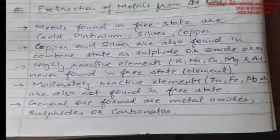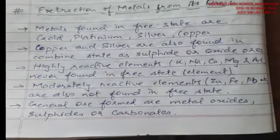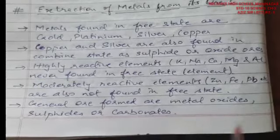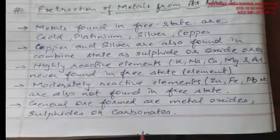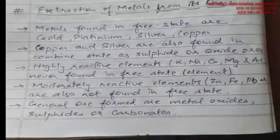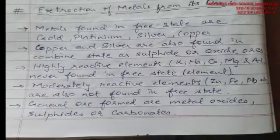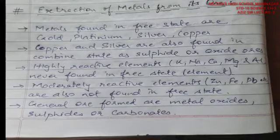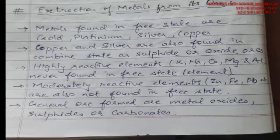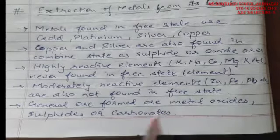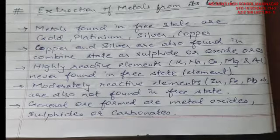Generally, ores are found in three basic forms: metal oxides, metal sulphides, and metal carbonates. Sometimes ores are also found in the form of hydroxides, phosphates, sulphates, and chlorides. But the three most common basic forms available in the earth's crust are metal oxides, metal sulphides, and metal carbonates.